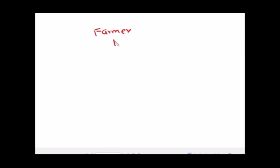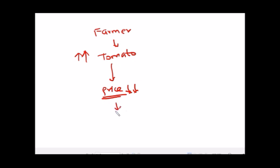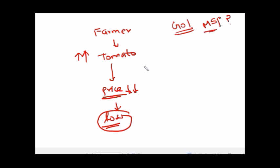For example, when farmers produce tomatoes in large quantities, the price falls. So farmers cannot get back the money they invested and incur a loss. To protect farmers against this loss, the Government of India proposes a minimum support price. The purpose is that if a loss occurs, next year farmers won't grow a particular item like wheat, rice, or sugarcane. If the Government of India gives assurance in the form of minimum support price, farmers will grow confidently.